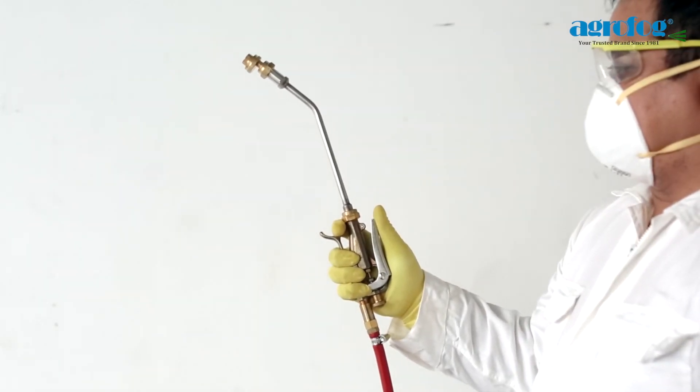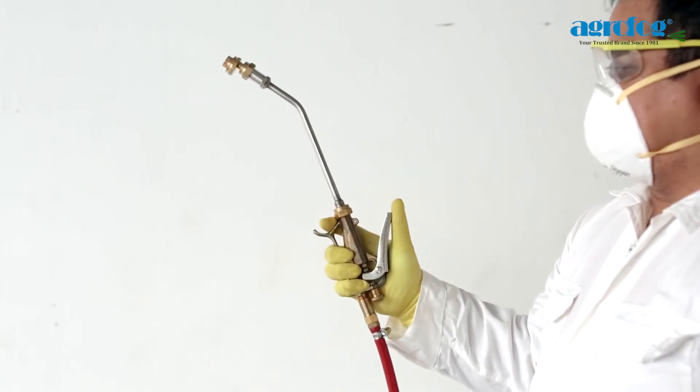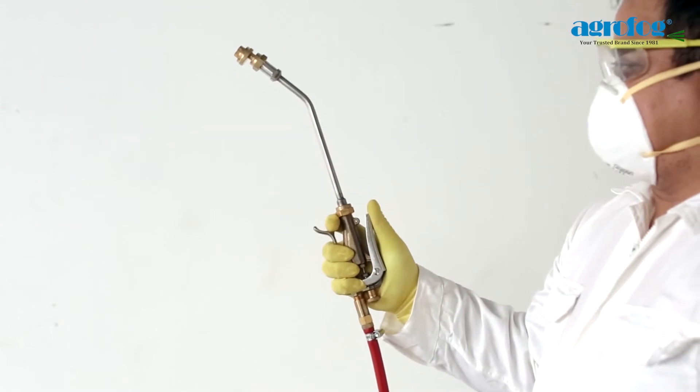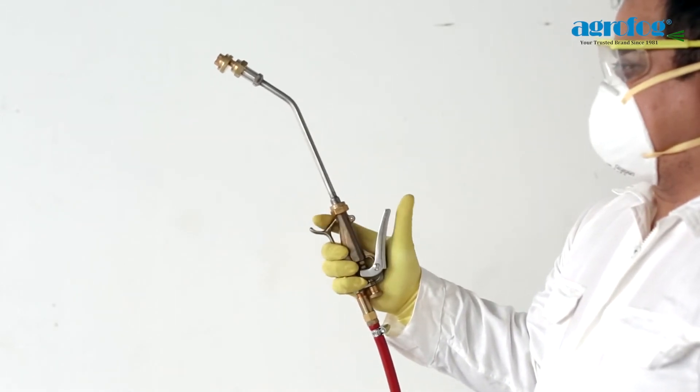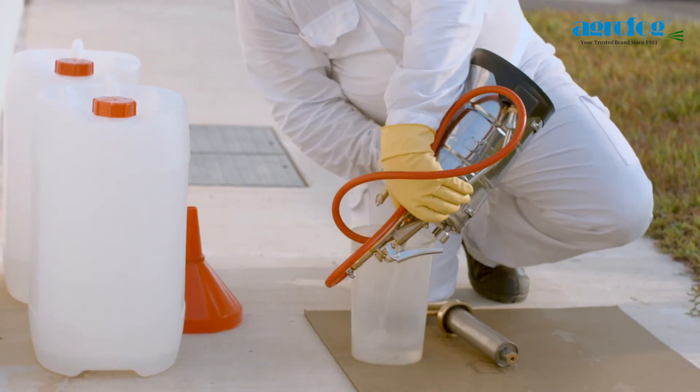Press the trigger with nozzle and hose above the tank and ensure that the nozzle is facing away from you. Empty the solution from the sprayer into a secondary chemical container.